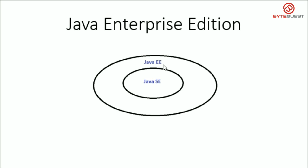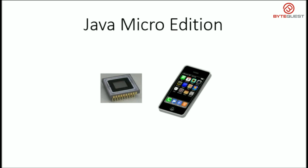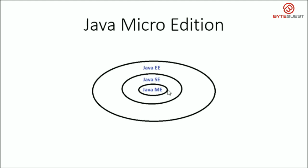Don't worry if you don't understand all of these terms yet. If you would like to develop applications for small devices like sensors, cell phones, or TV cable boxes and so on, you need to use Java Micro Edition, or Java ME. Applications developed with Java ME can run on different mobile phone operating systems like Android, iPhone, or Windows Phone. From this diagram, it is clear that Java Micro Edition is a subset of the Java Standard Edition.